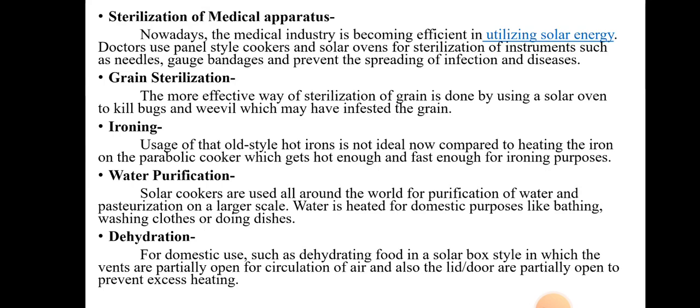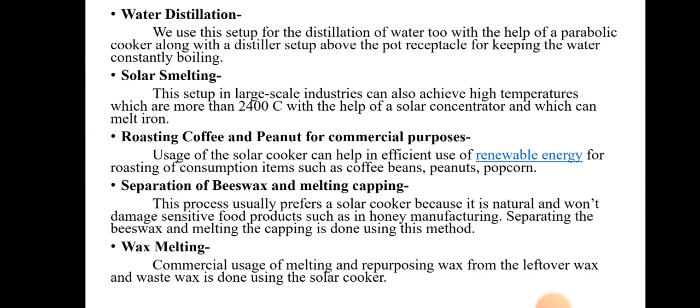Grain sterilization is also an application of solar cookers. For ironing, using the old-style iron heated on a parabolic cooker gets hot enough and fast enough for the ironing process. Solar cookers are also used for water purification. For dehydration, solar cookers are used in a solar box style where the vents are partially open for air circulation and the lid or door is partially open to allow moisture to escape.